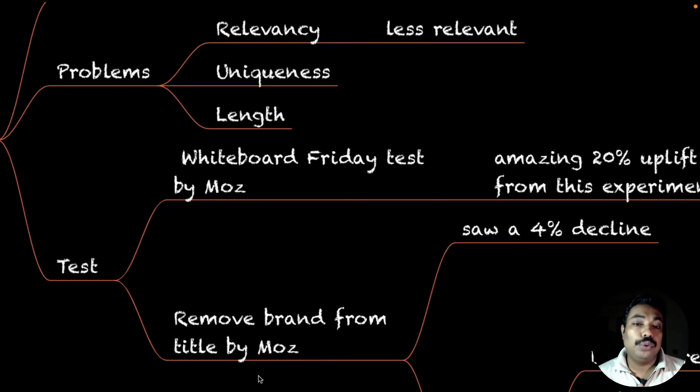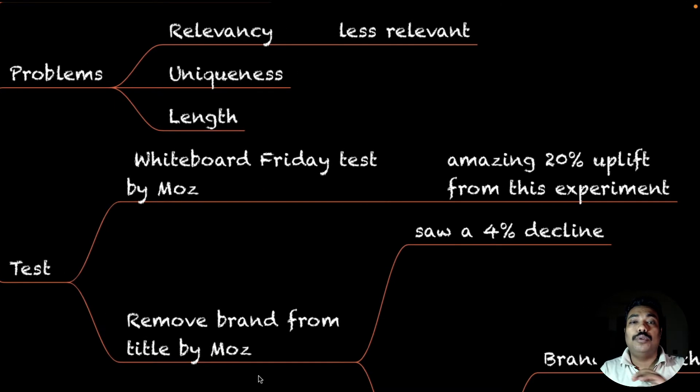The first test is Whiteboard Friday from Moz. What they did - every Whiteboard Friday title had Moz as a keyword. They divided all pages 50-50. They removed Moz from 50% and kept it on 50%. When they removed this, their traffic went up by 20%. Growth only because they removed that section.